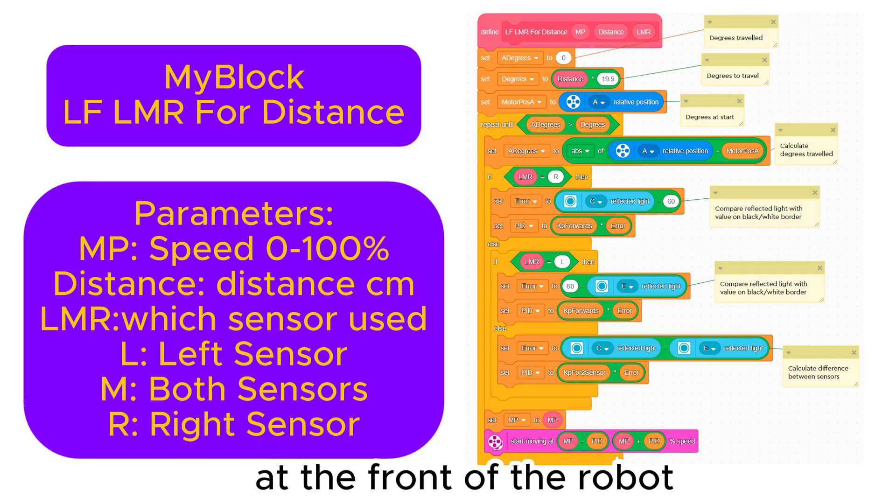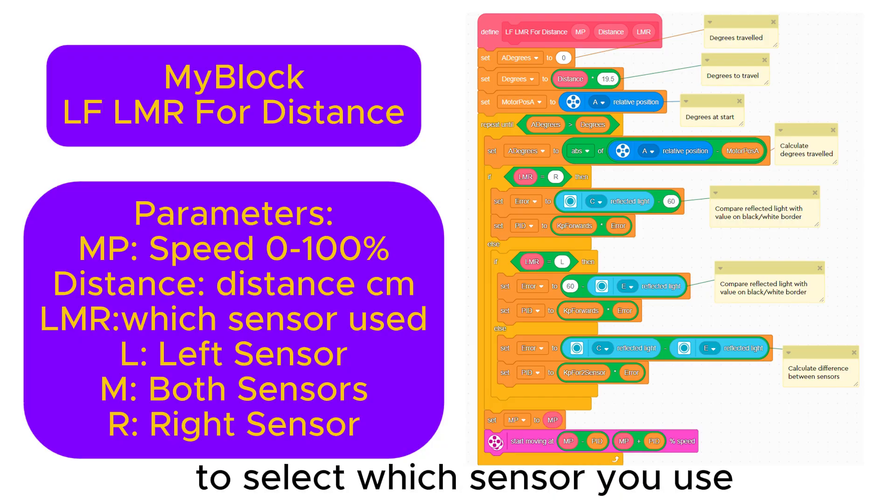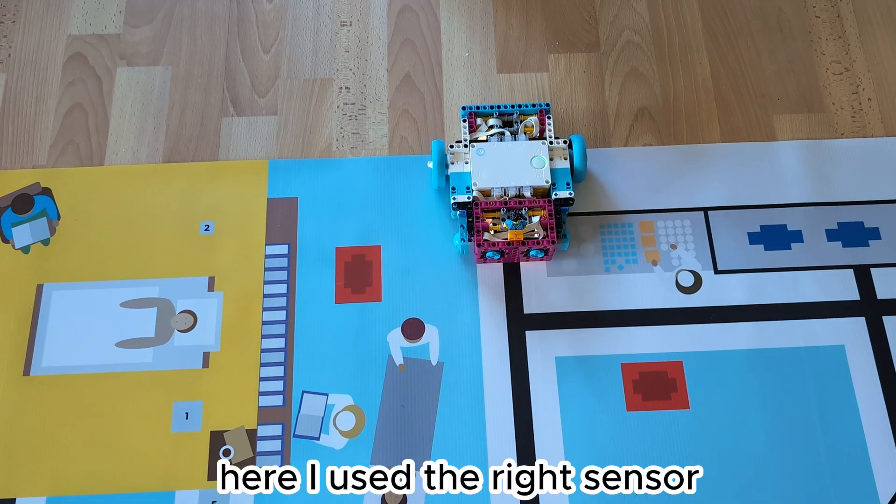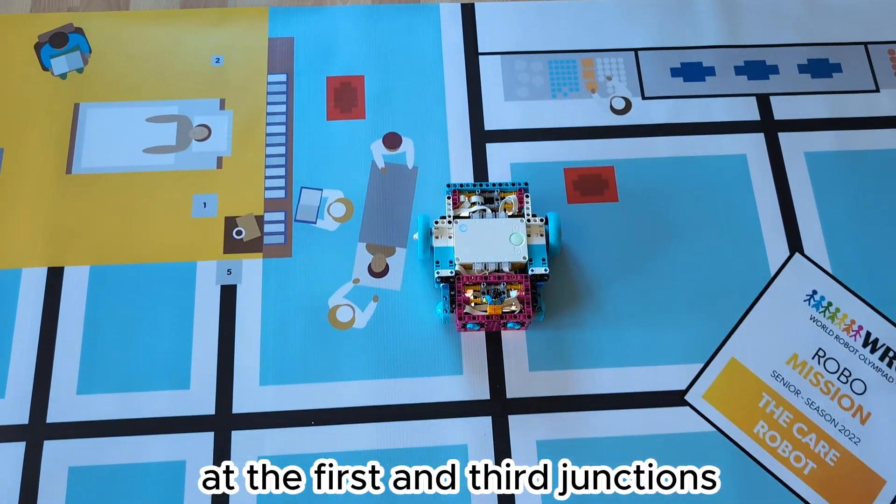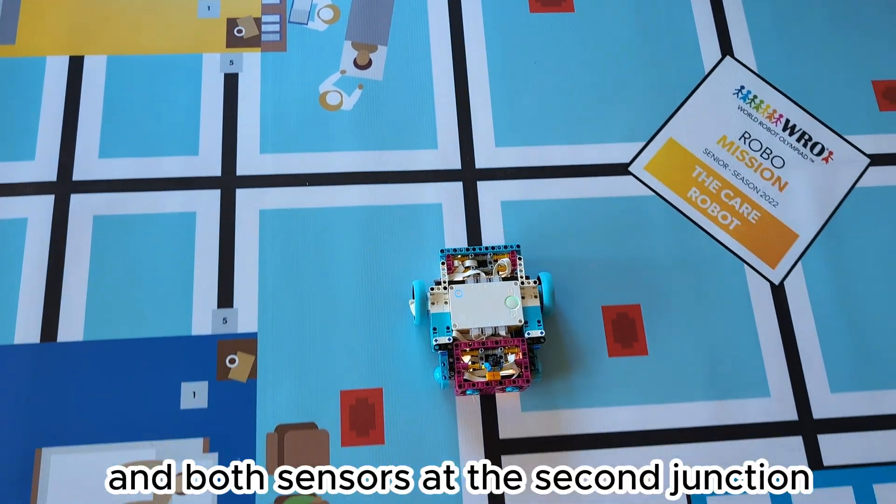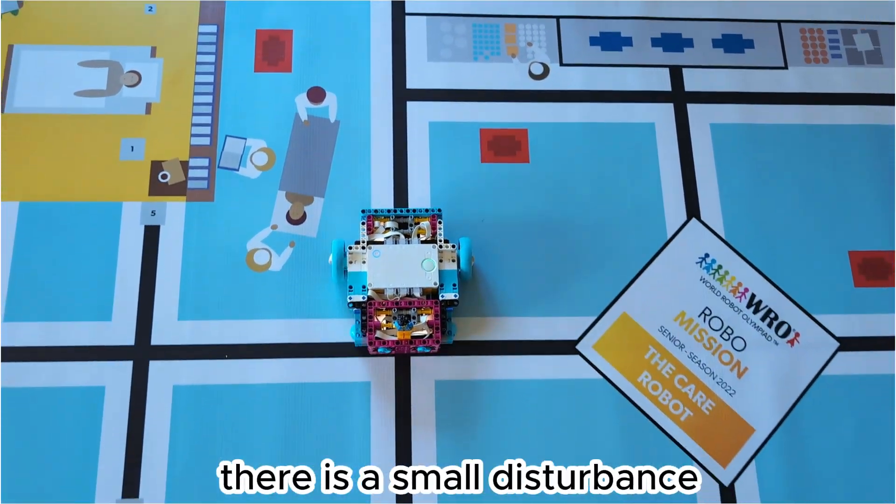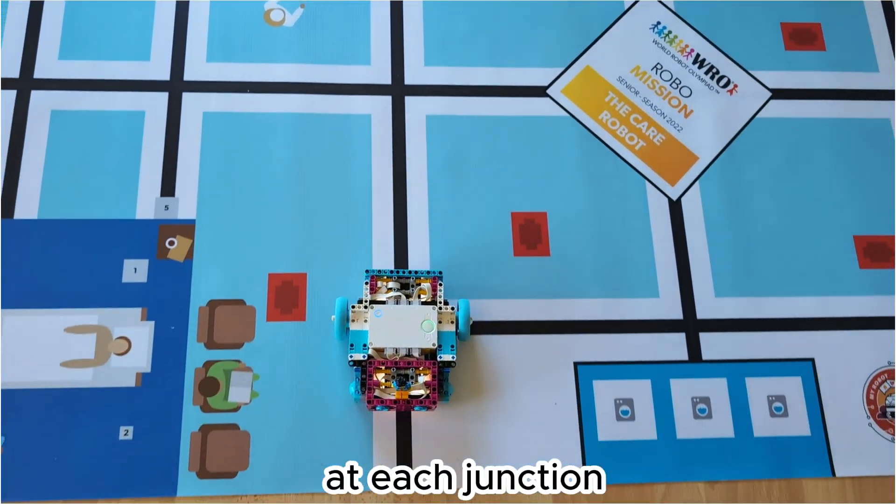If you have two sensors at the front of the robot you can make a my block to select which sensor you use for line following. This makes it possible to drive over junctions without a disturbance. Here I use the right sensor at the first and third junctions and both sensors at the second junction. If I swap the sensors around there is a small disturbance at each junction.